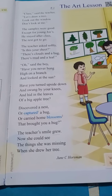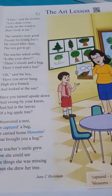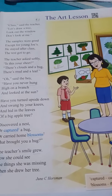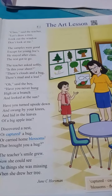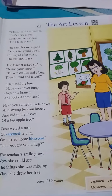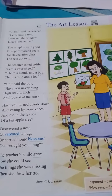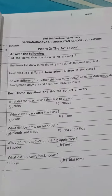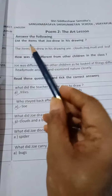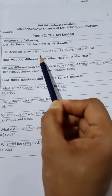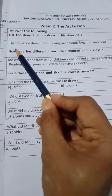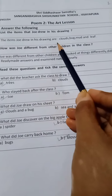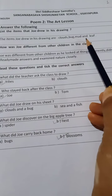In the other diagrams on the notice board, there was no bug, cloud, sky or mud — but in Joe's diagram, she saw all these things and the teacher was very happy with Joe's drawing. Exercise: list the items that Joe drew in his drawing. Answer: the items Joe drew are clouds, bug, mud and leaf.